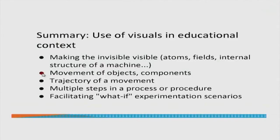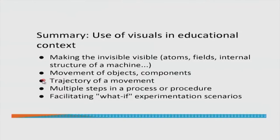The other big category is when we want to talk about movement of objects or components — for example, the typical car-and-road type of simulations in physics, where you want students to visualize what is happening as acceleration increases, or as a collision takes place. Movement of objects over time or over space — how location changes as a function of time or space — are again reasons why we use visualizations, because these are difficult for us to simply do in our own minds.